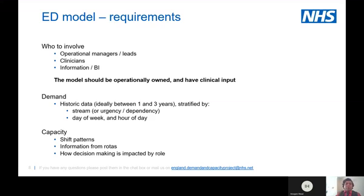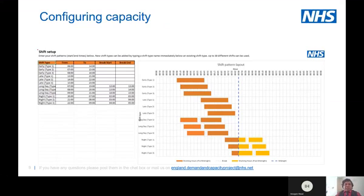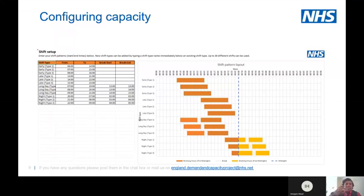Let me tell you a little more about the capacity side. In the model you will have your shift patterns for your department, and you can configure the shift name, when that shift runs from and when it finishes, and include any breaks stipulated — time where there is no decision-making capacity for that shift type. Once this information is configured, there is a graphical depiction in the model illustrating the configuration you've put in, so you can see at a glance what's going on.